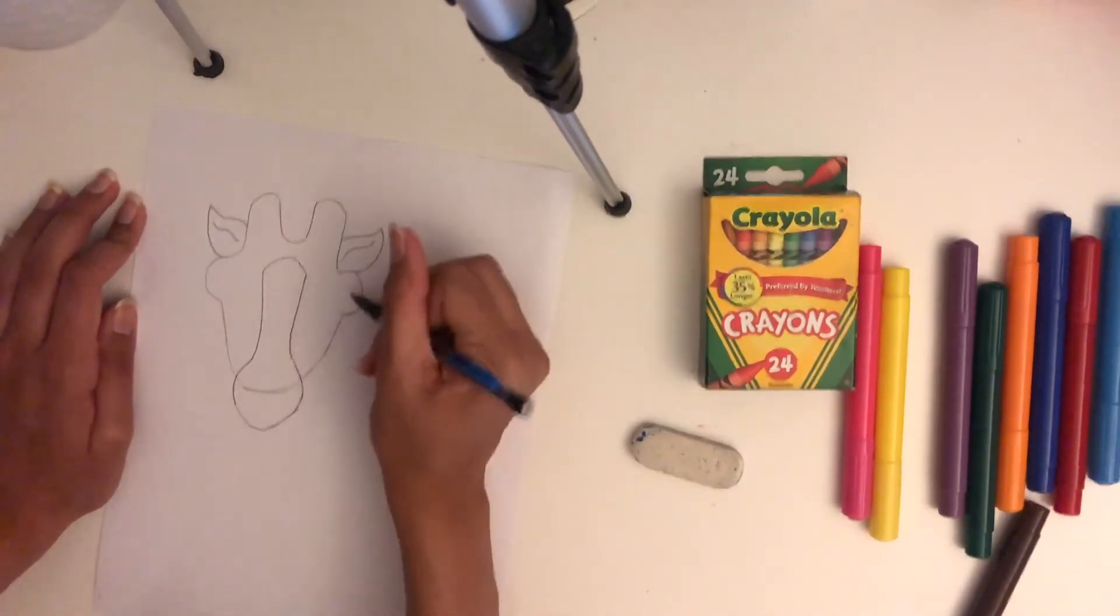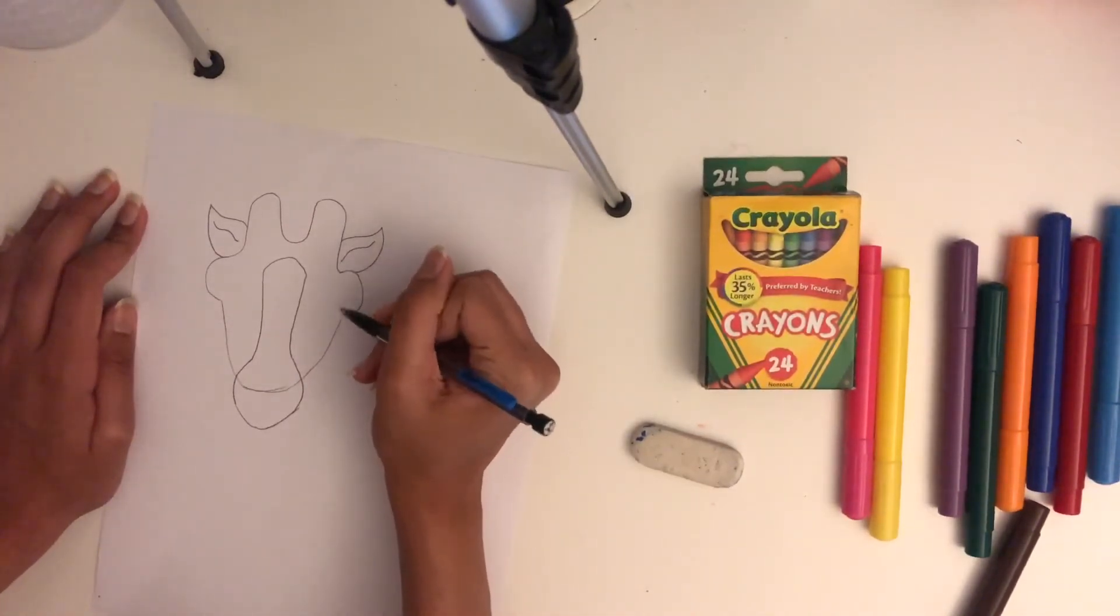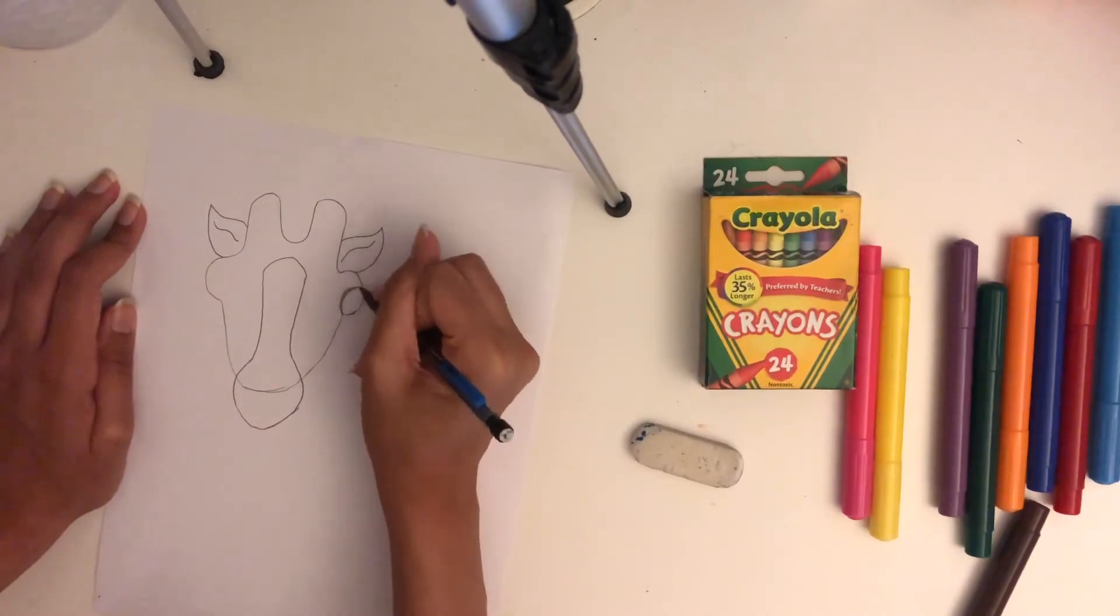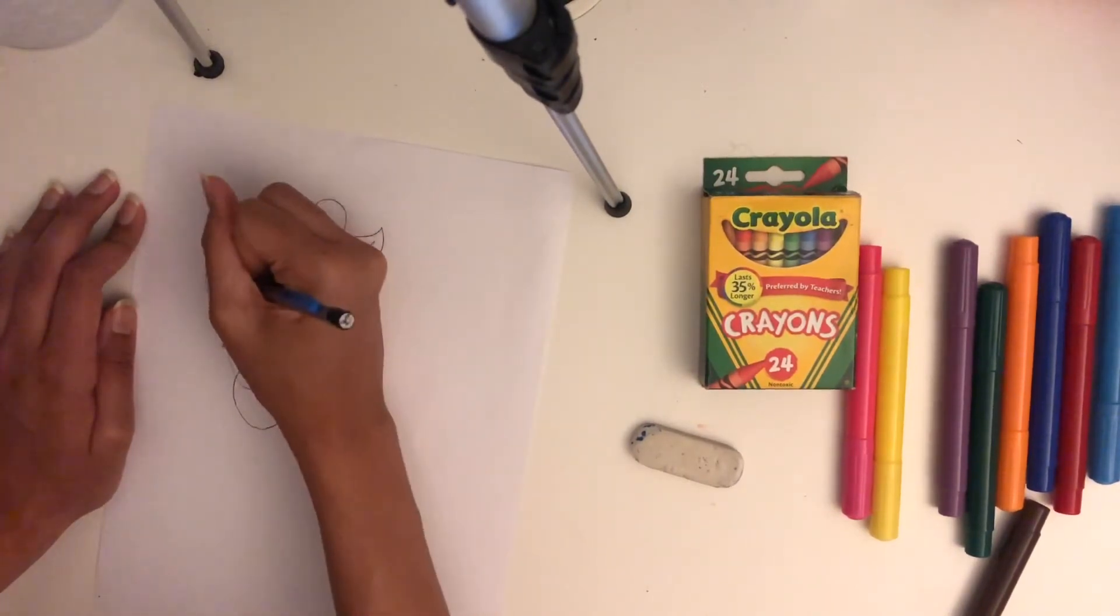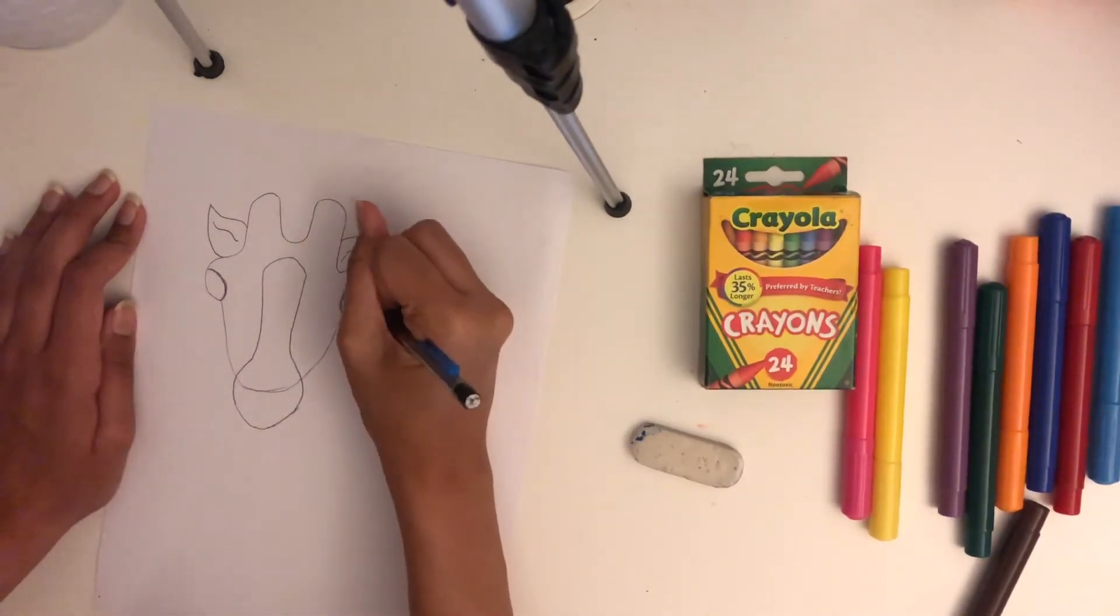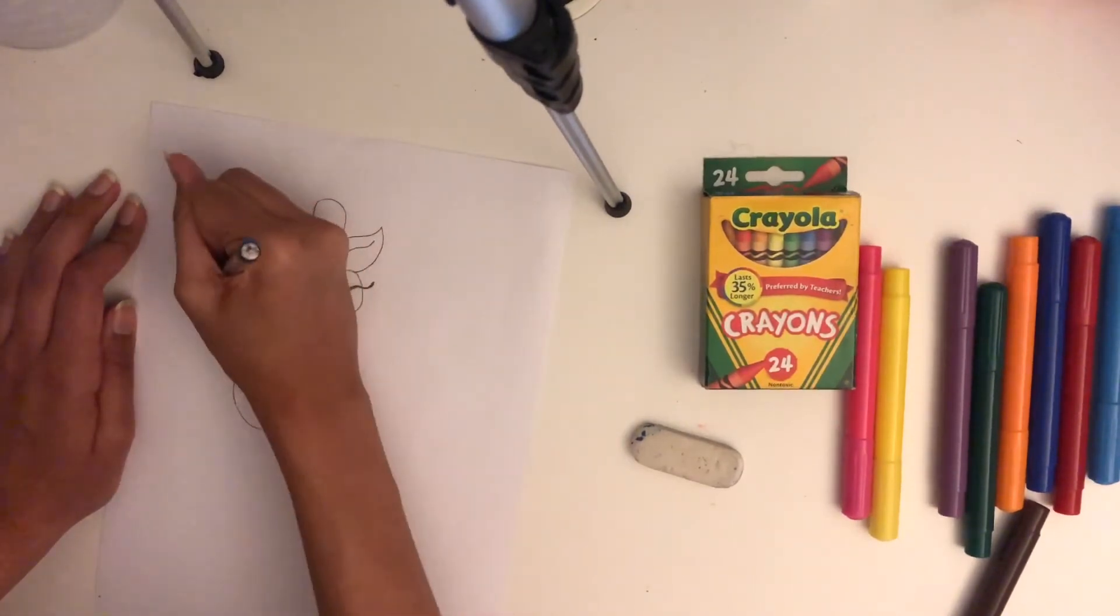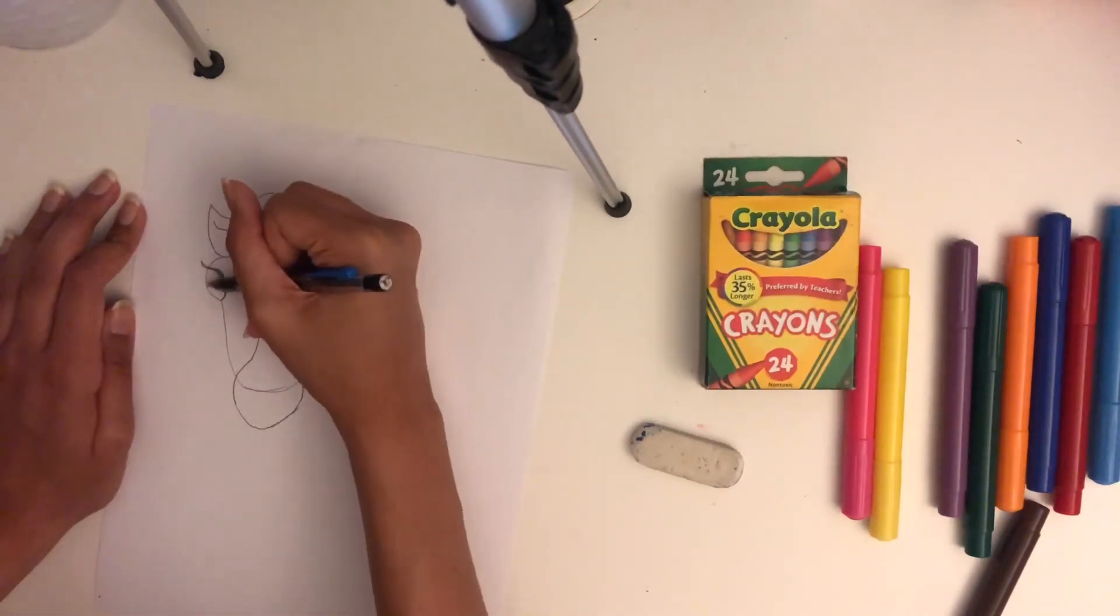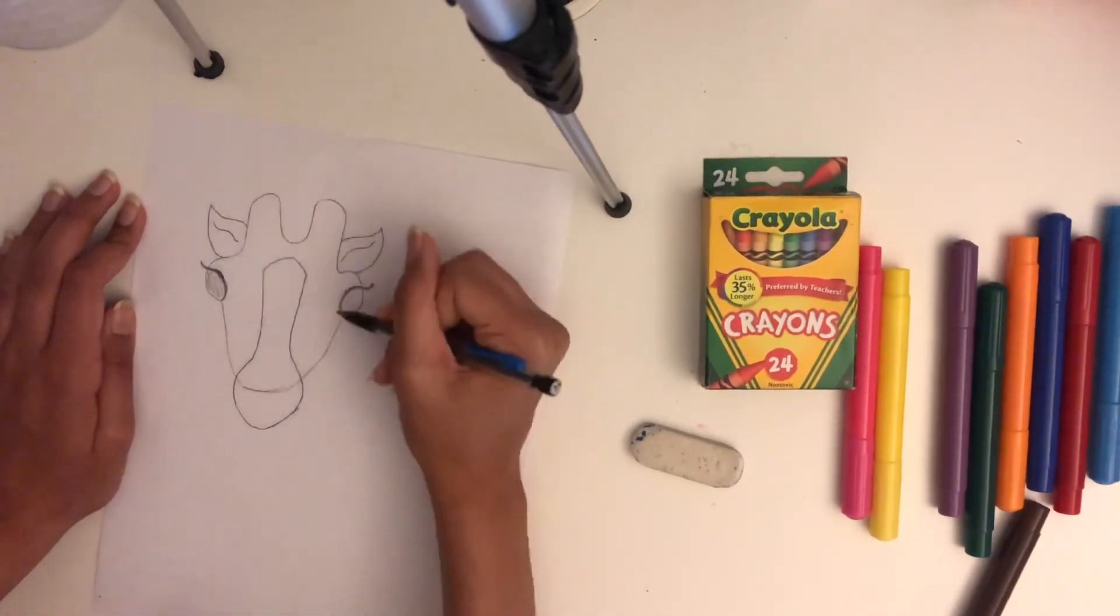So now, moving on back to our half circles here, these are going to be eyes. So I'm going to curve inward here, wherever makes sense for your drawing. Same on the other side. And I'm just going to add a line on the edge here as an eyelash. And I'm just going to shade this in because it's going to be black later.